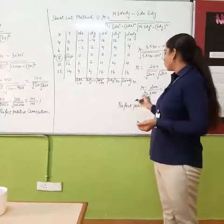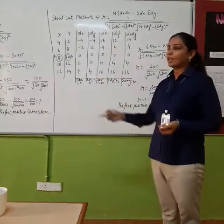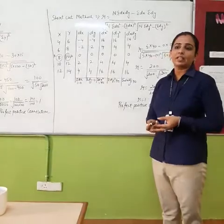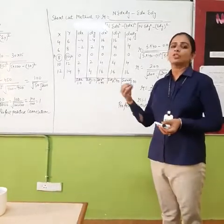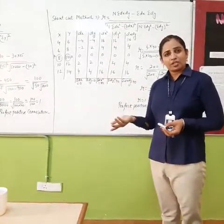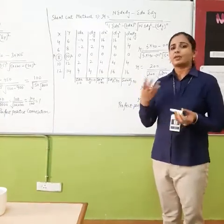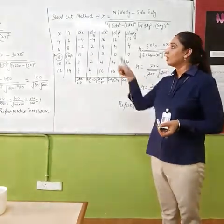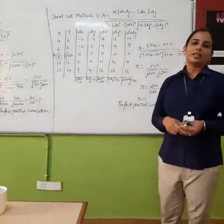Remember, the 1 correlation will come where the statement is linear. If statement will not be linear, then answer can be 0.75, 0.79, 0.95, 0.27, it can be anything. But it will be 1 only when the statement is linear. Thank you.